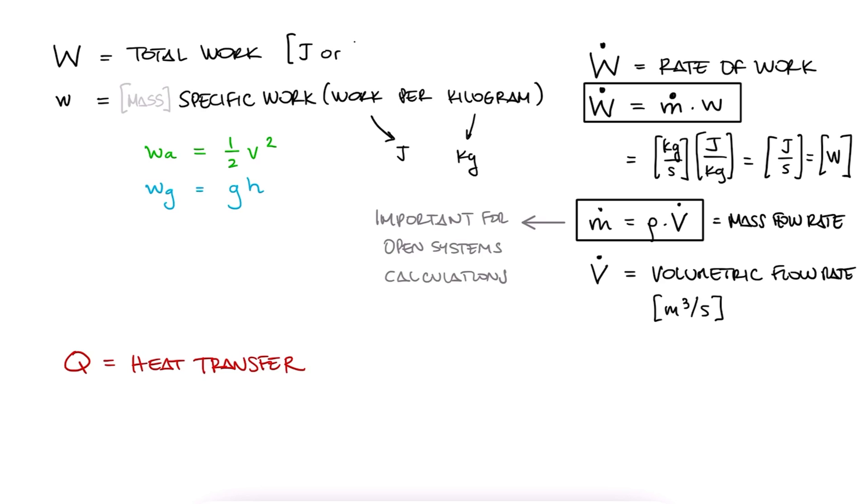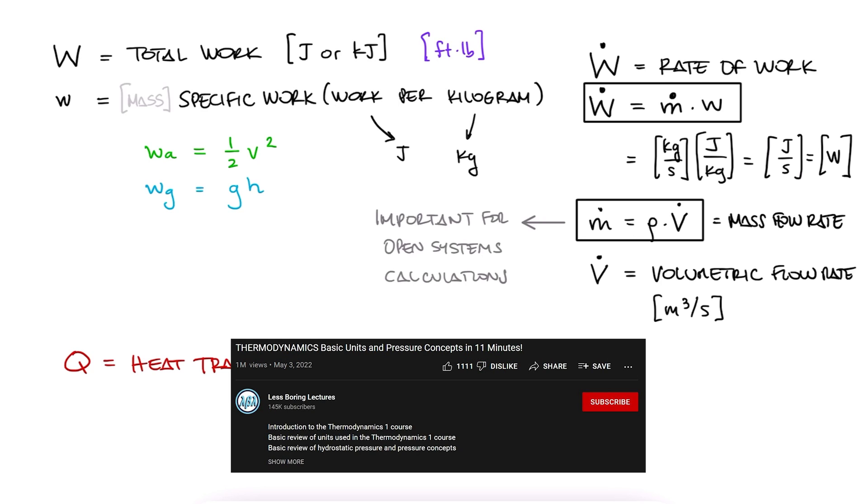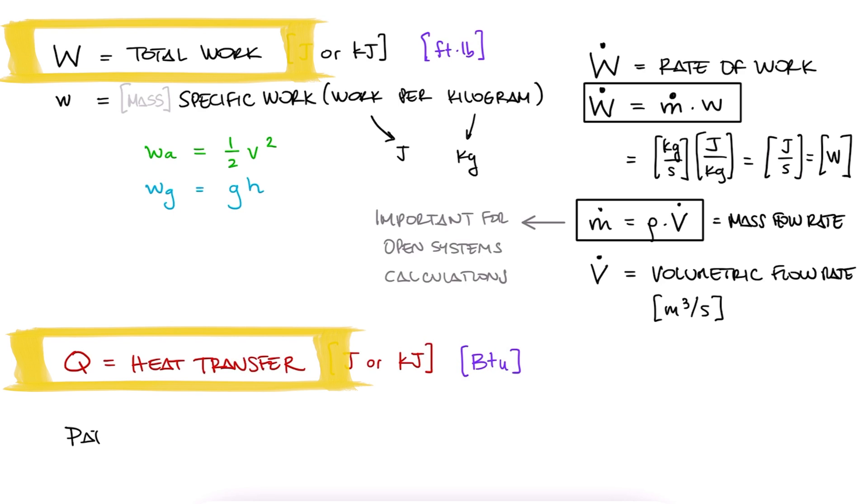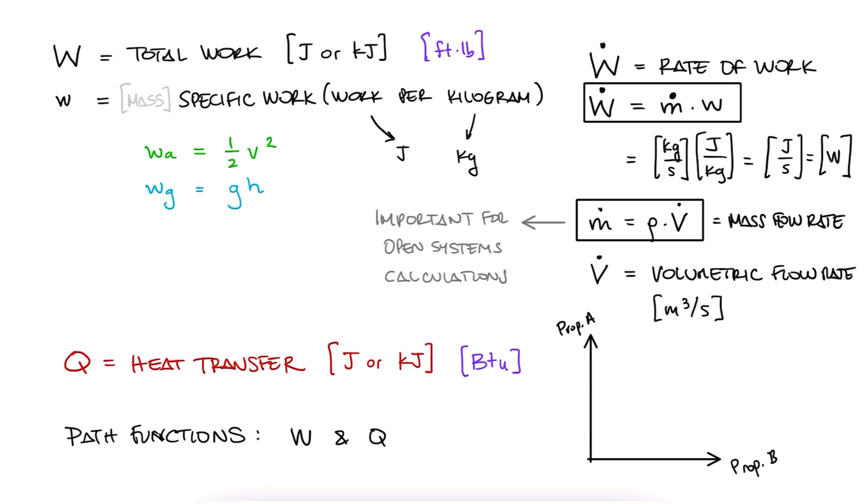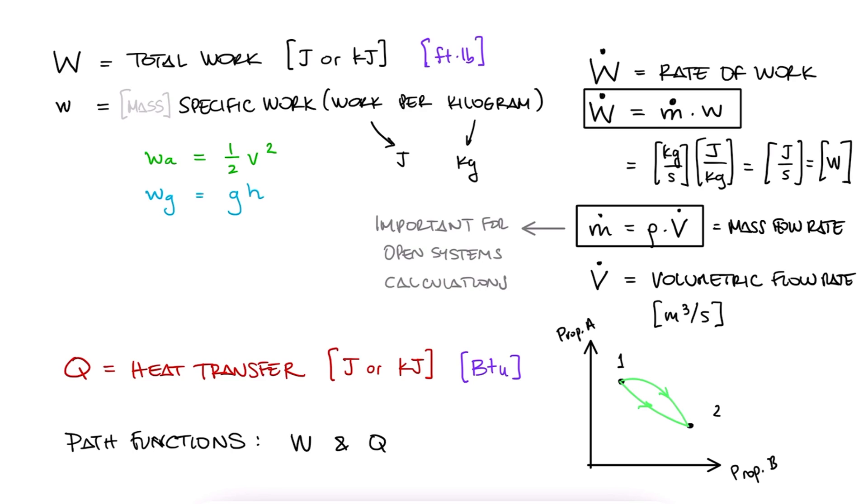And remember that both heat and work are measured in joules. In English units this is slightly different, so make sure to check one of the example links below to go over this. These two are also both path functions, meaning that the amount of heat or work we get out or have to put forth is dependent on the path it took for the system to get from one state to another, like we explained in the previous lecture, link below.